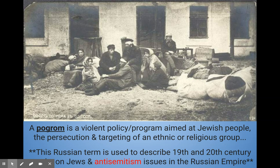There were serious problems in Russia during the 1800s. One of those was a pogrom — a violent policy aimed at Jewish people, antisemitism — the persecution and targeting of an ethnic or religious group. If you've ever heard of Fiddler on the Roof, that was a popular musical that follows a Jewish family living in Russia and depicts a growing hatred towards Jewish people. This wasn't just a problem in Nazi Germany — this Russian term describes the 19th and 20th century targeting and discrimination against Jews, which is antisemitism.